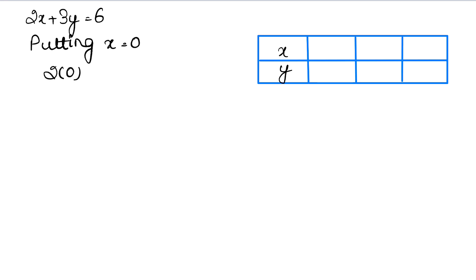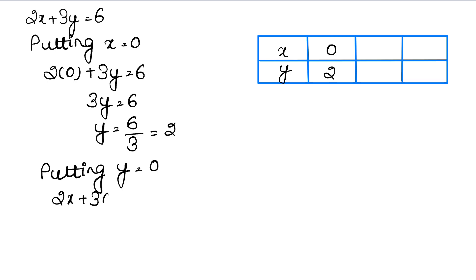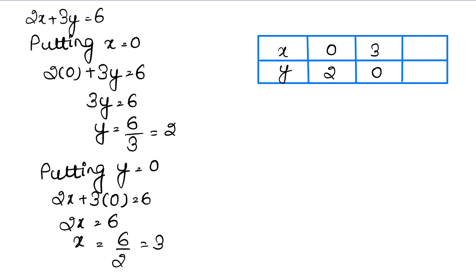Putting x equals to 0: we have 2 into 0 plus 3y equals to 6, so 3y equals to 6, then y equals to 6 upon 3, that is 2. So if x is 0, then y is 2. Putting y equals to 0: we have 2x plus 3 into 0 equals to 6, so 2x equals to 6, then x equals to 6 upon 2, that is 3. So if y is 0, then x is 3.